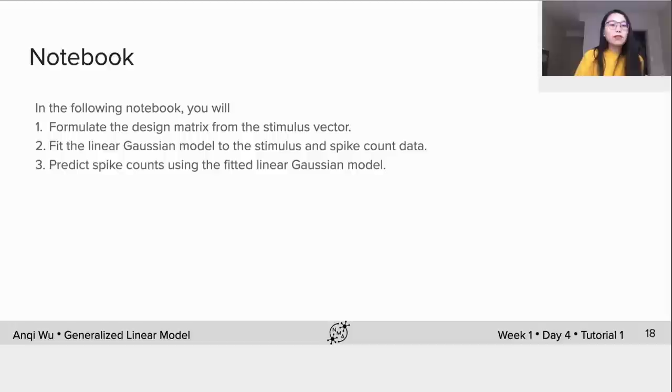In the following notebook you will formulate the design matrix from the stimulus vector, fit the linear Gaussian model to the stimulus and spike count data, and predict spike counts using the fitted linear Gaussian model. Hope you enjoy that.